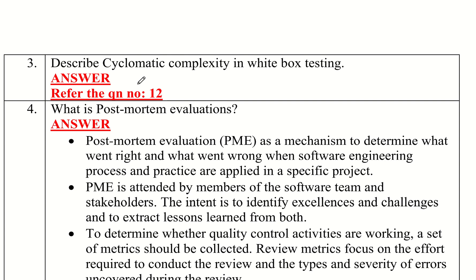The second method is to remember that cyclomatic complexity is equal to E minus N plus 2, where E is the number of flow graph edges and N is the number of flow graph nodes. So the formula is E minus N plus 2.